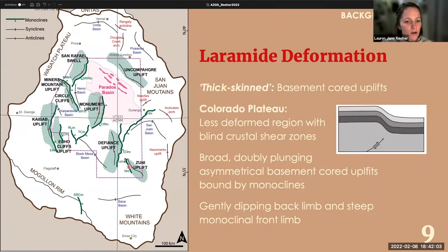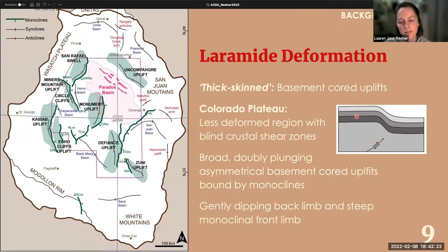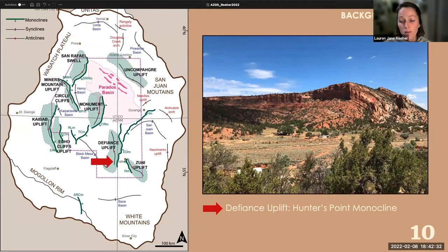The Laramide deformation on the Plateau produced basement-cored uplifts bound by monoclines shown in green. We primarily see the monoclines at the surface since the plateau hasn't been exhumed enough to expose the basement shear zone that drove these uplifts. What we observe is the deformed sedimentary cover. Here's a beautiful example — the Hunter's Point monocline along the Defiance Uplift near Gallup — showing the flat, shallow-dipping back limb and the steeply dipping front limb. The basement shear zone is buried in the valley below.